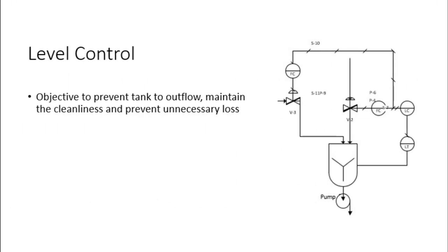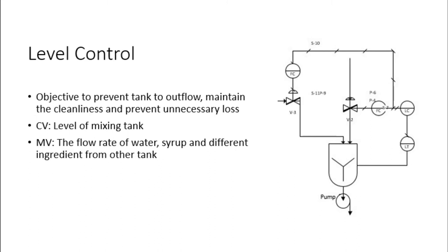First, we will talk about the level control in the mixing tank. The objective of this control is to prevent the tank from overflowing, maintain cleanliness, and prevent unnecessary loss. To control the mixing tank, manipulation of the flow rate of materials such as syrup, water, and acid from other tanks will be needed. The level transmitter will detect the maximum level in the tank and send a signal to the control valve, and once the control valve receives the signal, the tank will be automatically closed to prevent outflow. The disturbance of this process is the flow rate of the inlet stream.